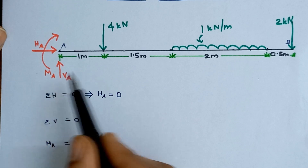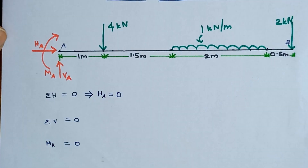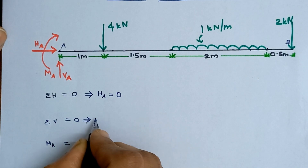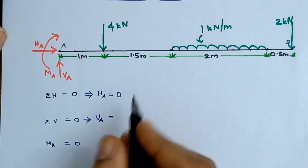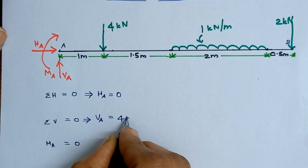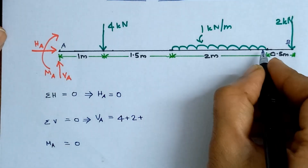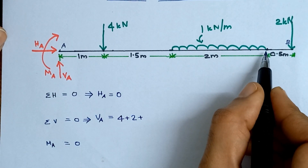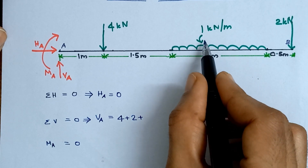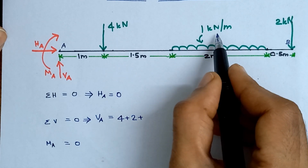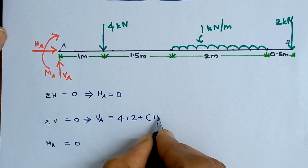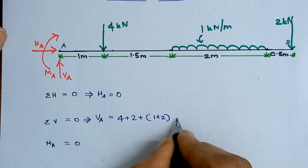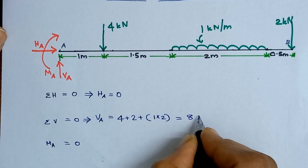For vertical forces, we have 1 upward force and 3 downward forces. We can write total upward force equal to total downward forces. So VA equals these 2 point loads: 4 plus 2, plus the UDL. For the UDL we consider it as a load of magnitude 1 into 2 — that is load intensity multiplied by the span over which it is acting, giving 2 kN. So we get VA = 8 kN.